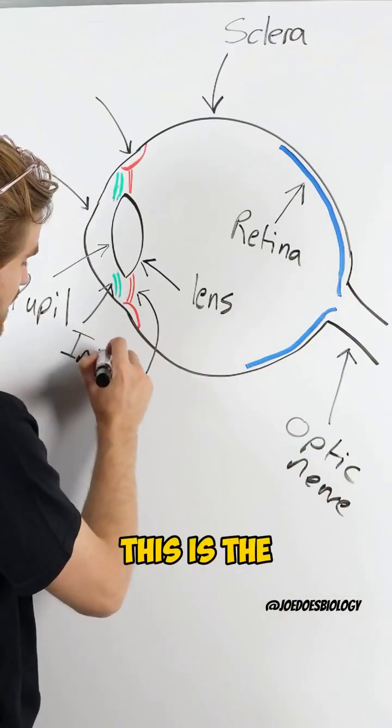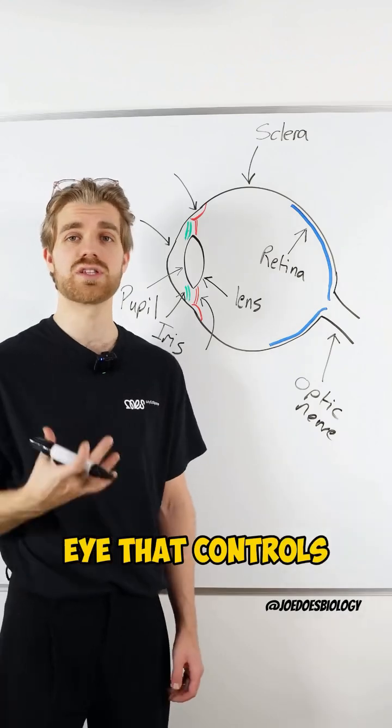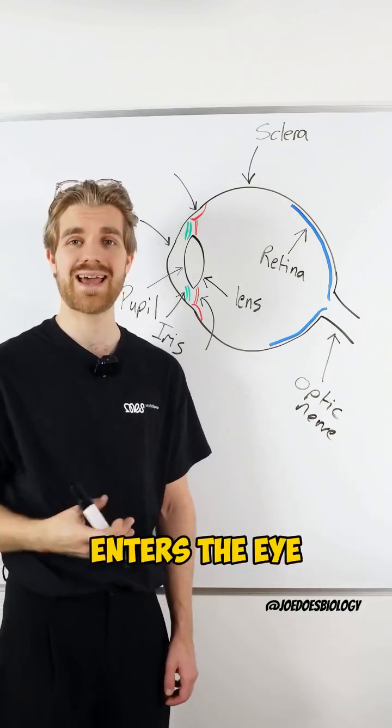Here we've got the iris. This is the colored part of the eye that controls the size of the pupil and controls how much light enters the eye.